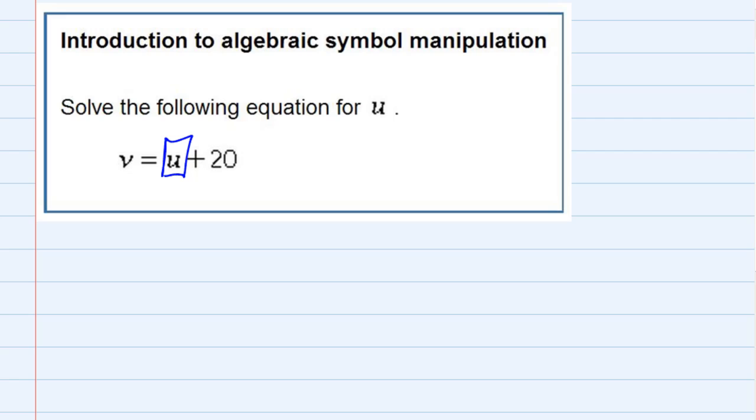And since it's on the right, I'm going to try to get it by itself on the right. All I need to do is get rid of the plus 20. And I can do that by subtracting 20 on the right hand side.